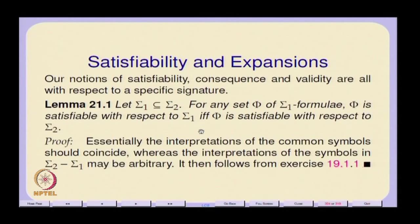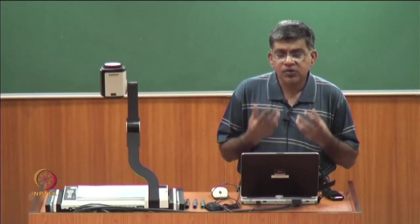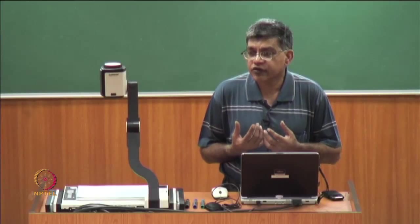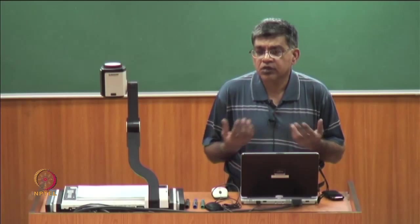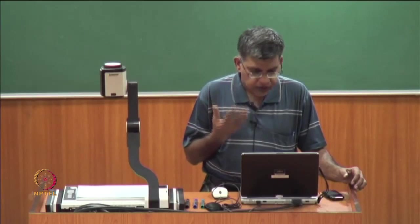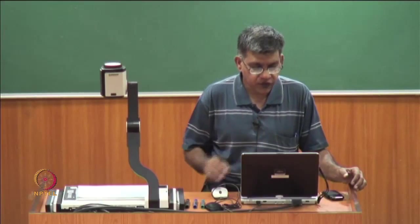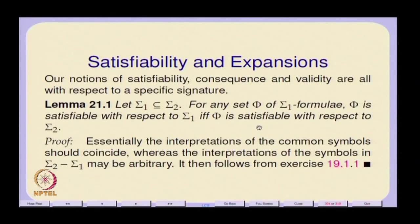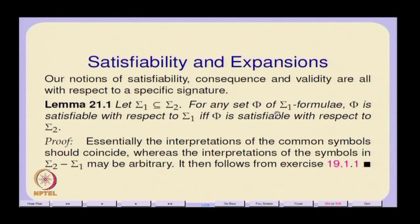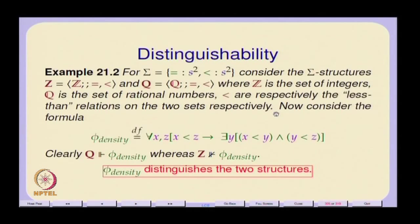Essentially, the symbols common to both signatures will have the same interpretation as far as satisfiability of phi is concerned in both structures. For all other symbols — those in sigma 2 but not in sigma 1 — you can give them any interpretation you like, and satisfiability will still follow. This is intuitively obvious, but there is an exercise to formally prove this using the semantics, which I leave as homework.